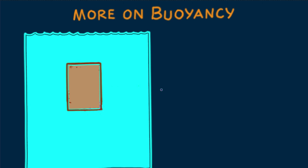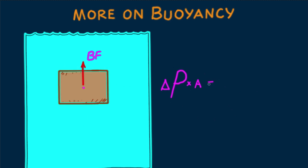So does this greater difference in forces mean there's greater buoyant force in this vertical position? It turns out no. Greater pressure difference multiplied by the correspondingly smaller top or bottom surface area produces a buoyant force which is exactly equal to the smaller pressure difference on the block in its horizontal position multiplied by its larger top or bottom surface area. So the buoyant force is the same either way.